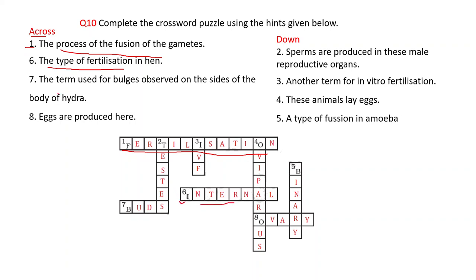Seventh across: the term used for bulges observed on the sides of the body of hydra — starting with 'B' — these are buds. Eggs are produced here — starting with 'O' — this part is known as ovary.